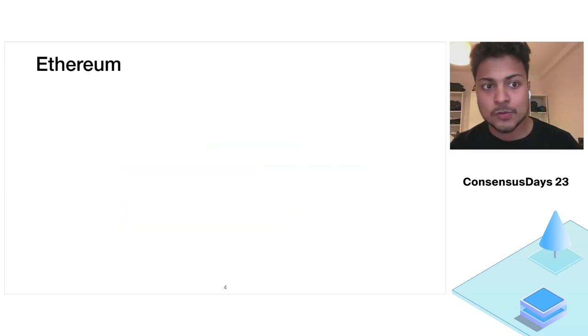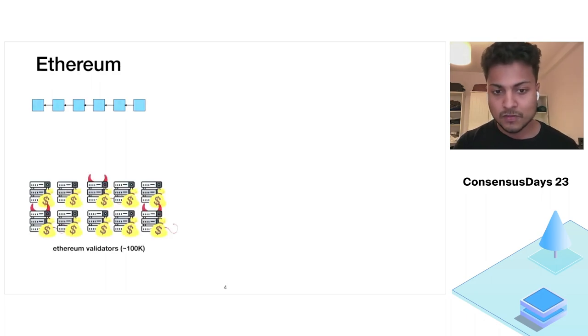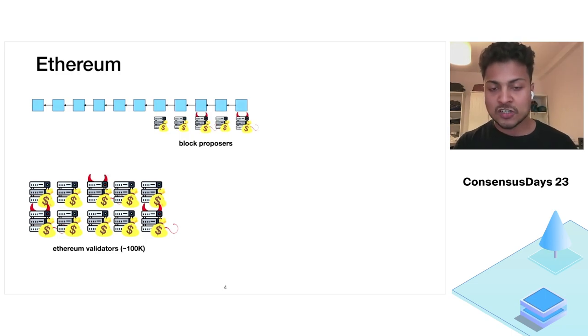Before we actually look into such constructions, let's do a quick recap of Ethereum's consensus. Ethereum uses a fairly complicated proof of stake consensus based on Casper FFG. But for the sake of this presentation, we will only have a very high level view of the consensus. In Ethereum, the full nodes have to lock a certain amount of ethers in the network to participate in the consensus. These full nodes are also referred to as validators. The time is divided into slots and validators are chosen randomly proportional to their stakes to propose a block in a particular slot.